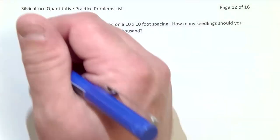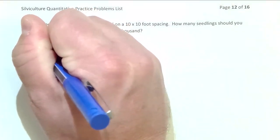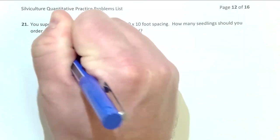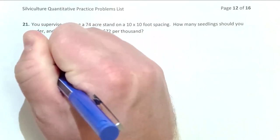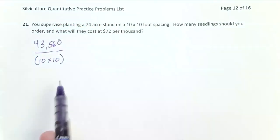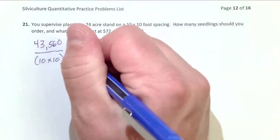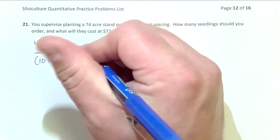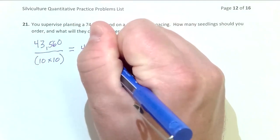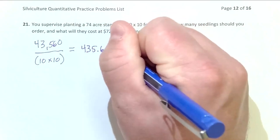So first, let's figure out how many trees per acre we want to order. We do that: 43,560 divided by 10 by 10. Do the math in the parentheses first, so multiply 10 by 10 first. 43,560 divided by 100 gives you 435.6 trees per acre.